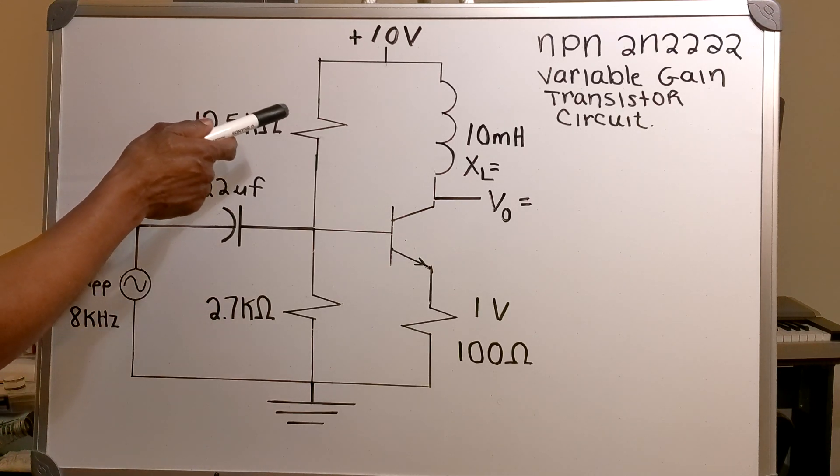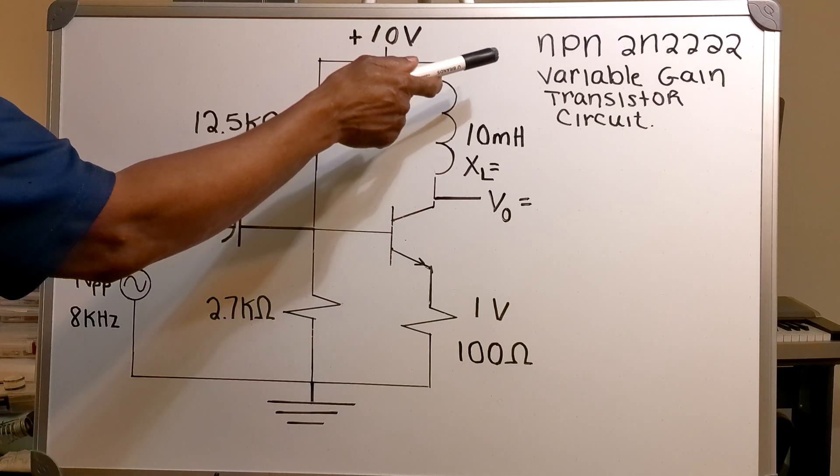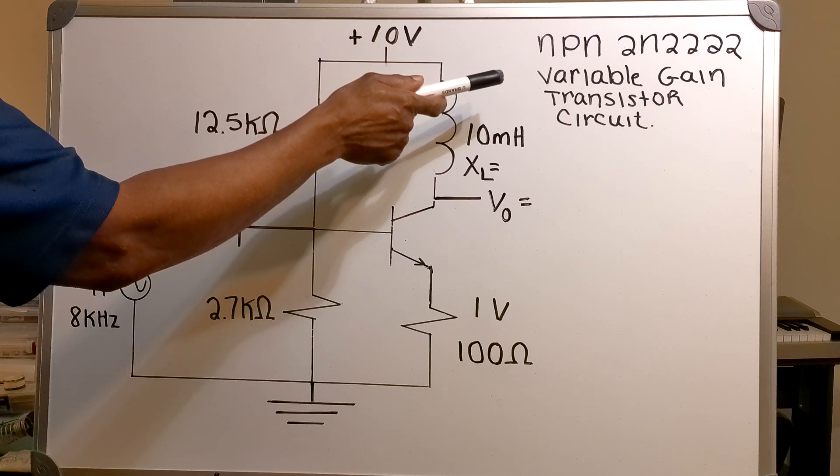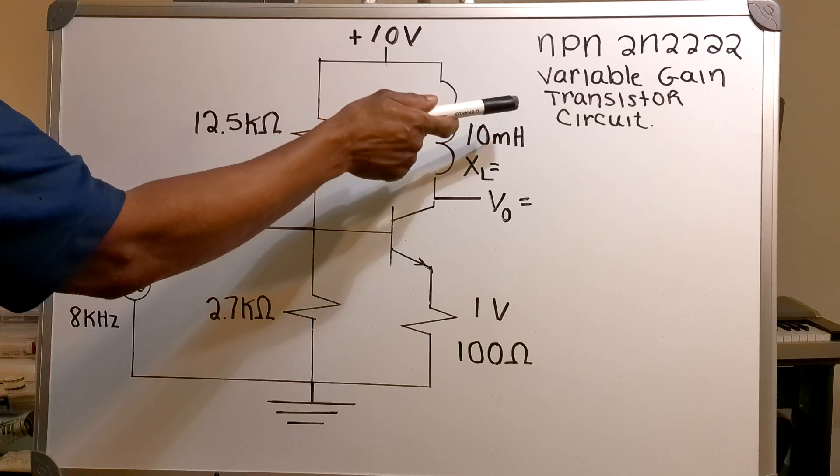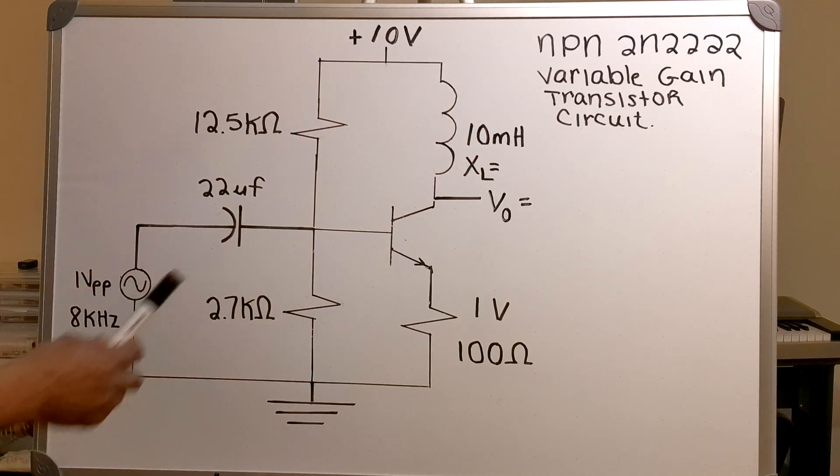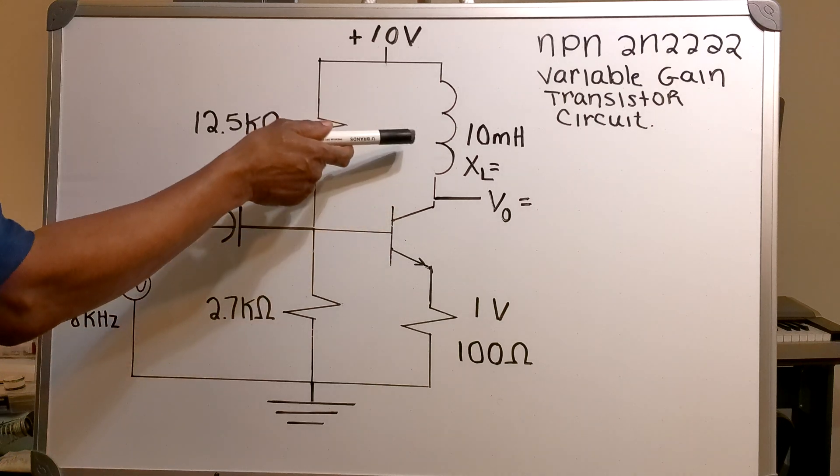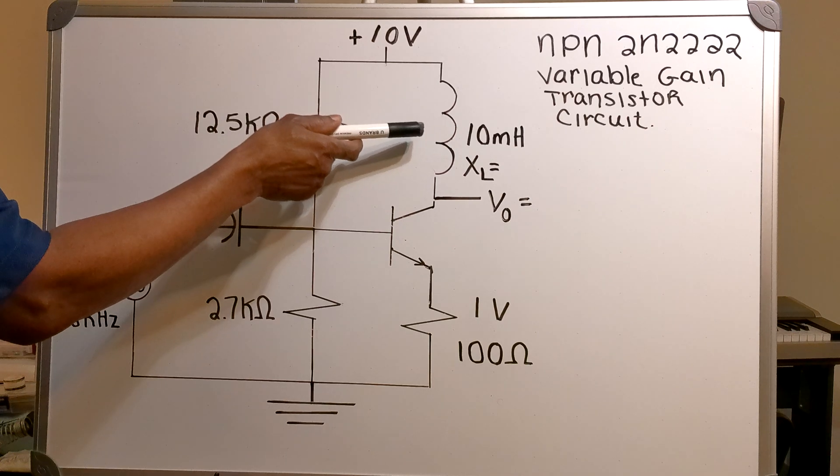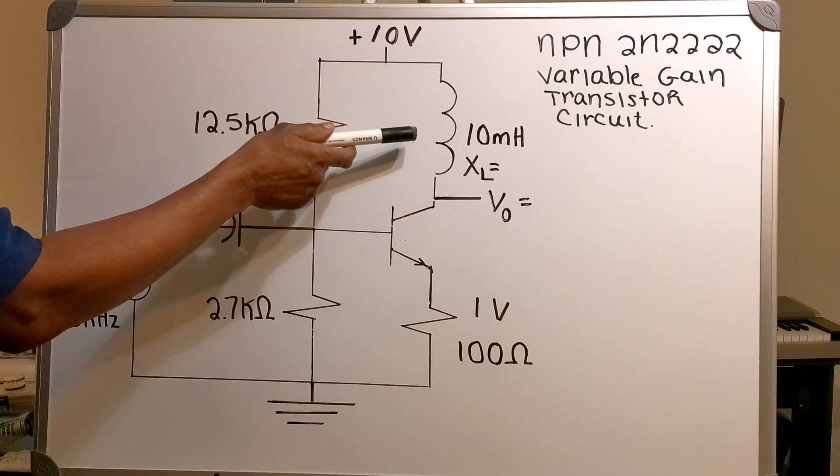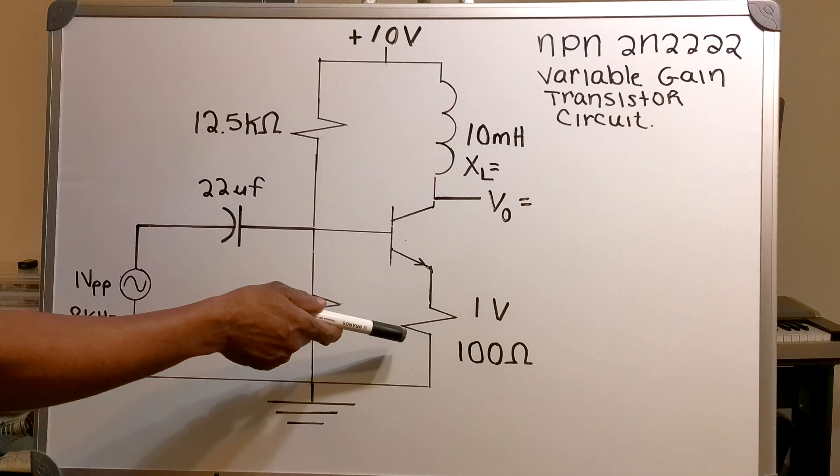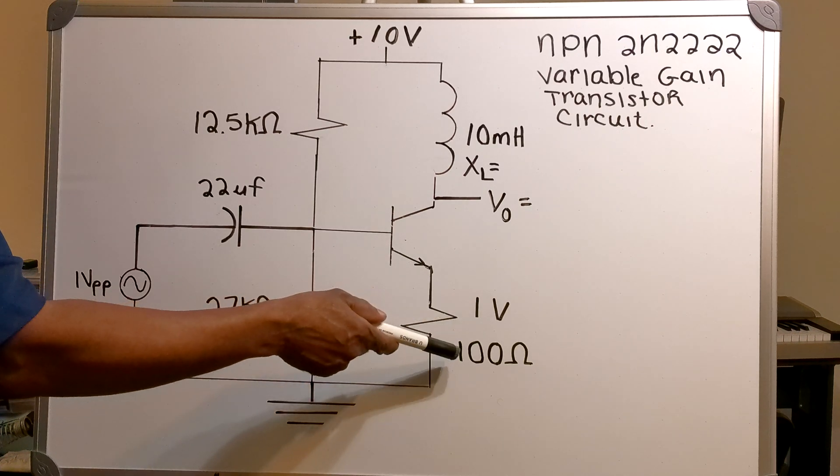In this video I've got an NPN 2N222 variable gain transistor circuit. On the collector side of the transistor I've got a 10 mH inductor. On the middle side I've got a 100 ohm resistor.